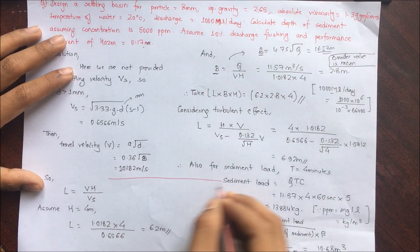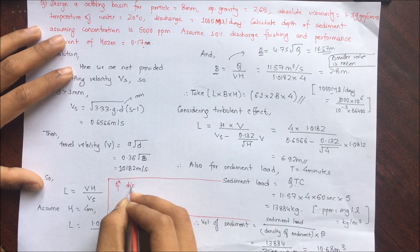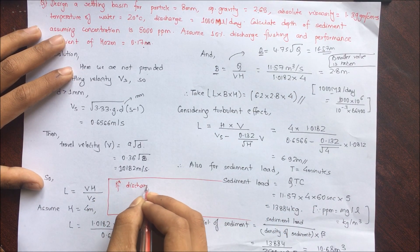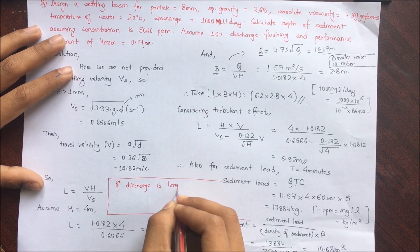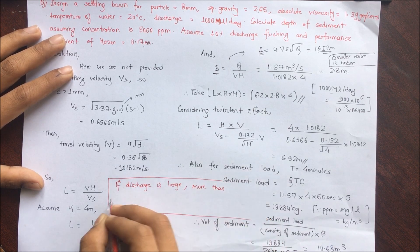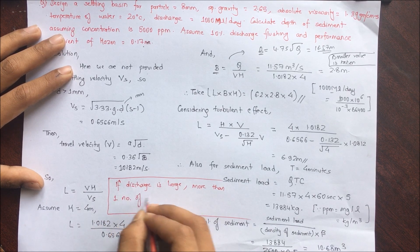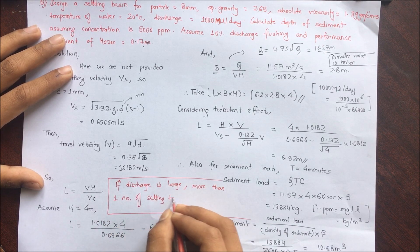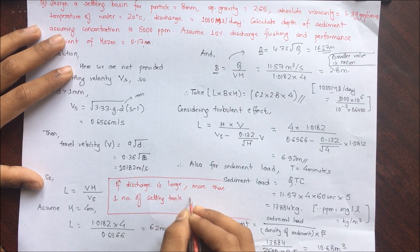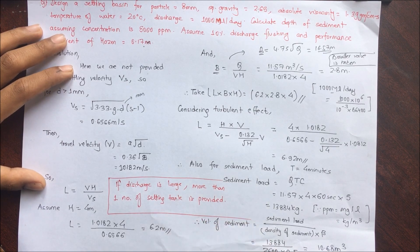A general note: if the discharge is large, more than one settling basin or tank should be provided. For example, if discharge is 60 m³/s, two settling tanks would be required.